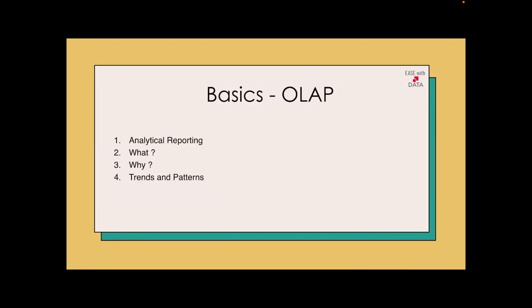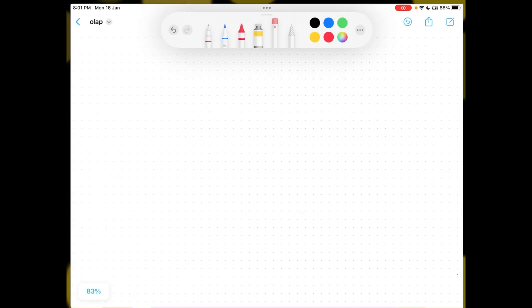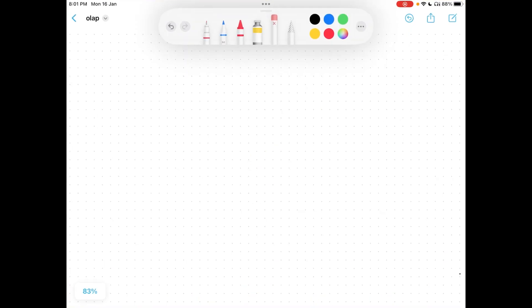In this video we are going to discuss about OLAP systems. OLAP stands for Online Analytical Processing. It supports analytical reporting. In the previous video we discussed about OLTP systems — now we'll discuss what is analytical processing and analytical reporting. I'll switch to freeform and first discuss the features of OLAP, then we'll discuss with an example.